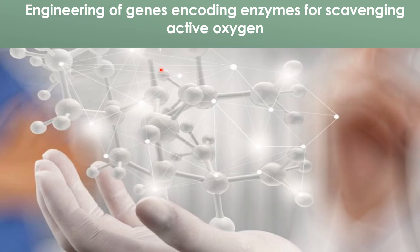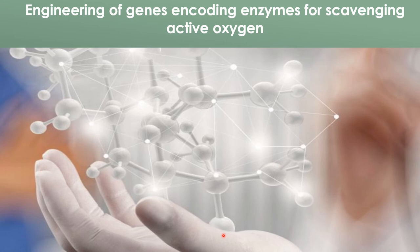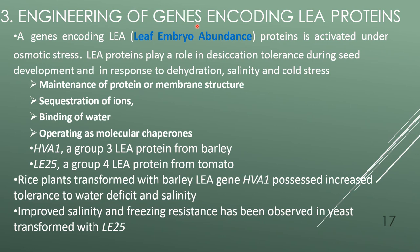Engineering of genes encoding enzymes for scavenging active oxygen: plants suffer from various stresses which lead to overproduction of active oxygen species in the cell. To minimize the damaging effects, plants produce antioxidants to detoxify harmful oxygen. Genes encoding enzymes with antioxidant capacity include ascorbate peroxidase, superoxide dismutase, and glutathione reductase. Transgenic plants overproducing superoxide dismutase showed reduced injury from water deficit and freezing stresses in field conditions. Engineering chloroplastic superoxide dismutase in tobacco led to increased chilling tolerance of photosynthesis, and tobacco plants overproducing cytosolic ascorbate peroxidase showed increased tolerance to oxidative stress.